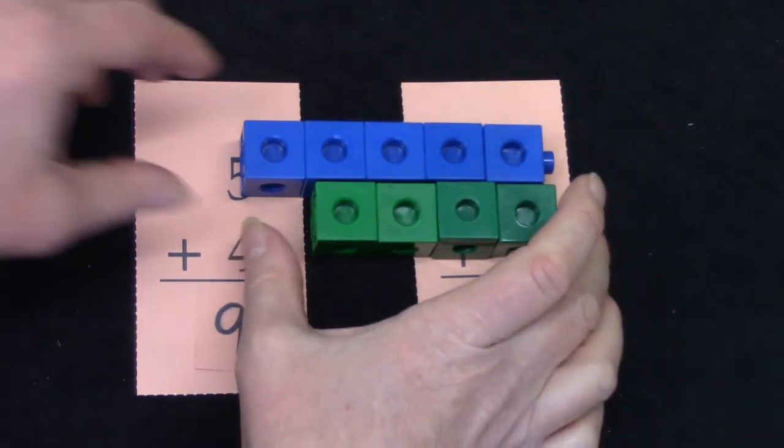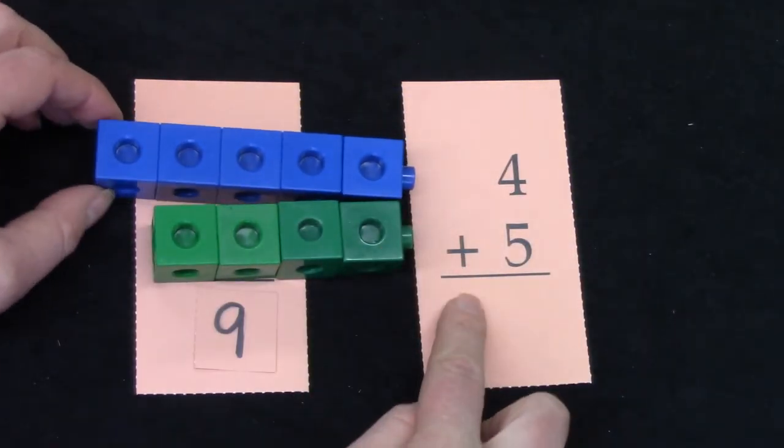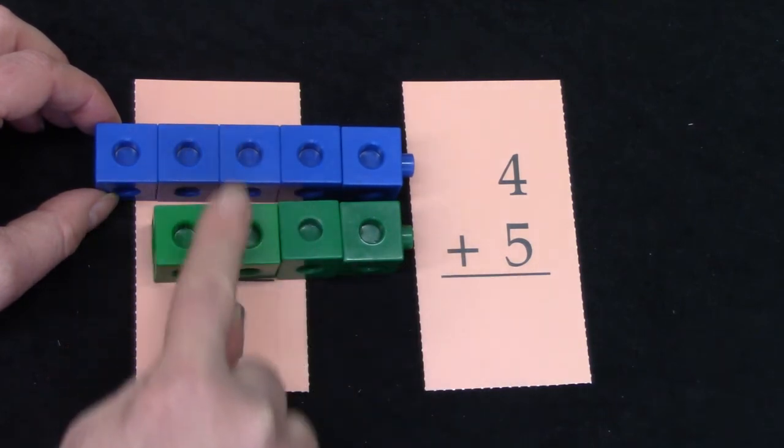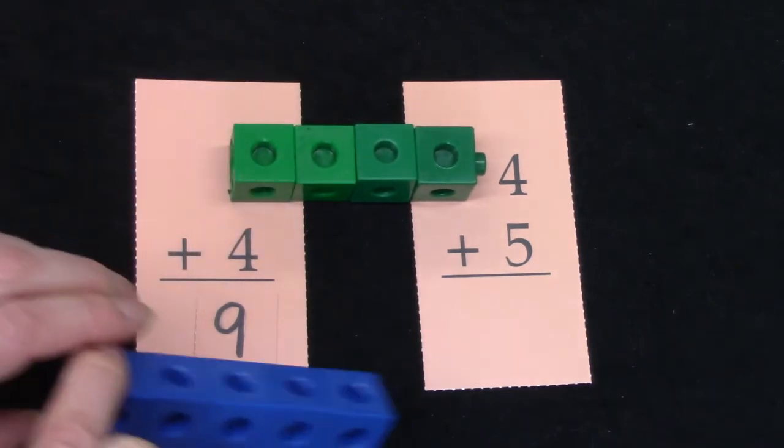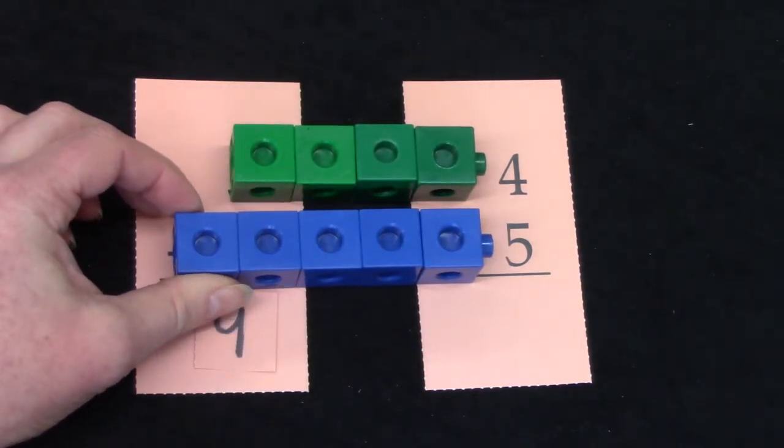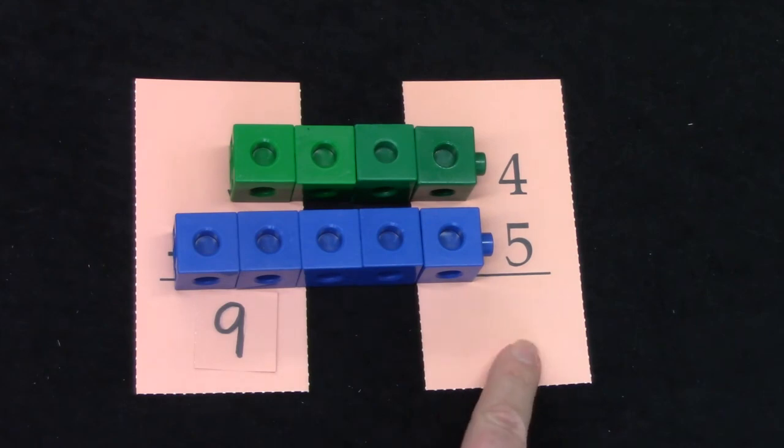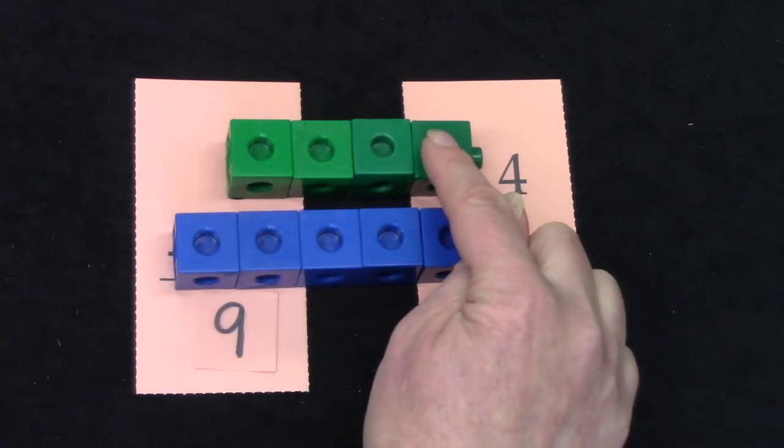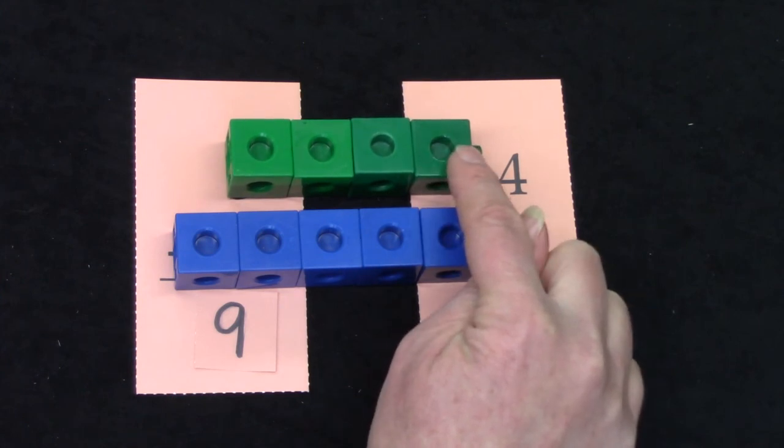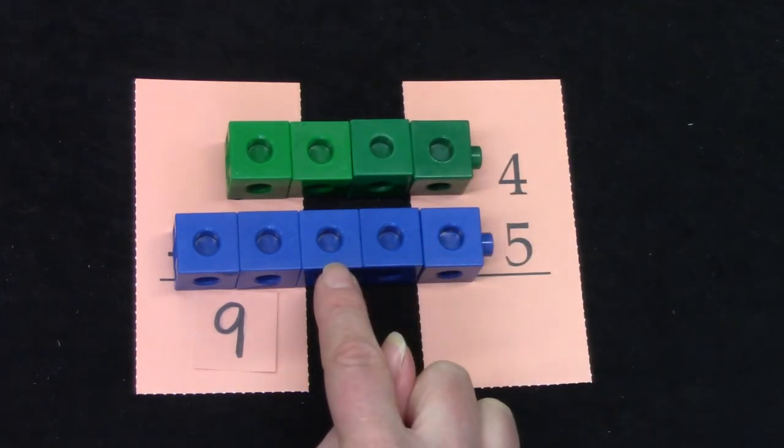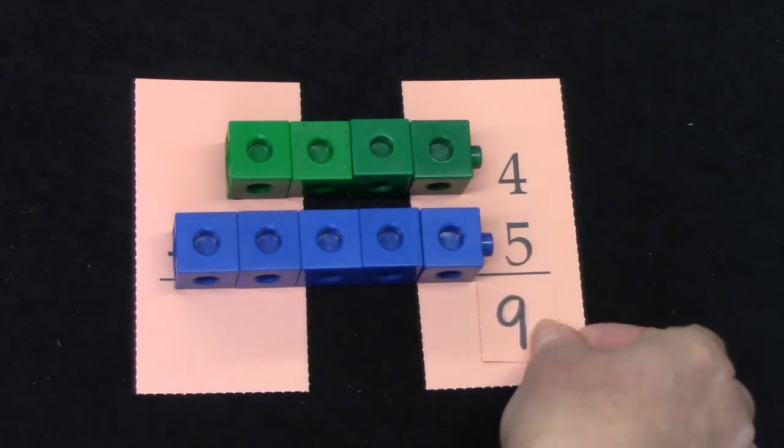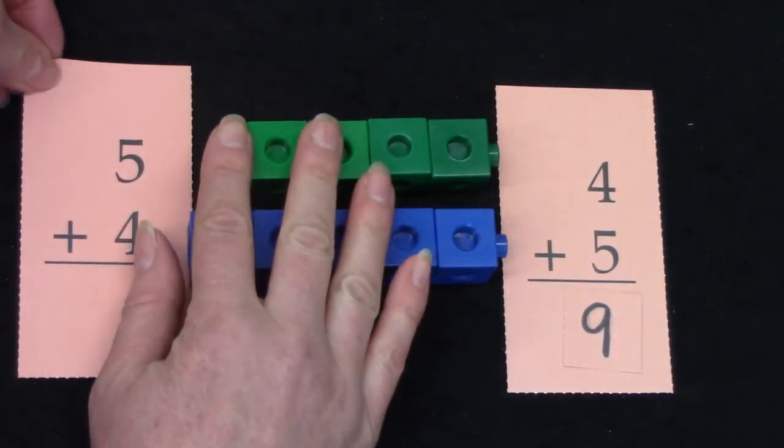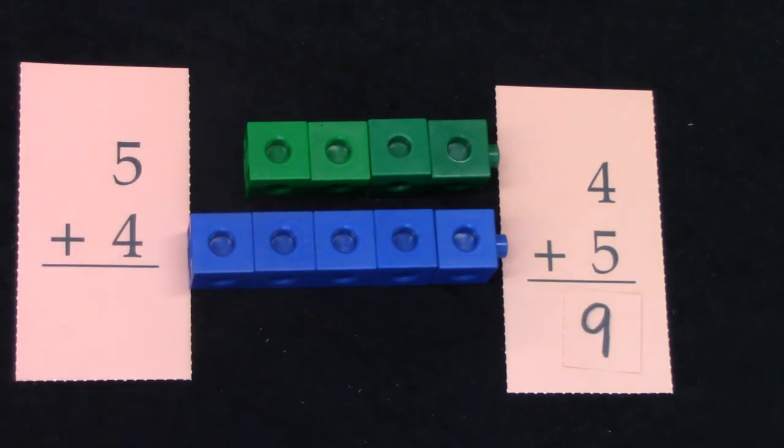Let's switcheroo and look at these facts. 4 plus 5. All I need to do is switch these around. 4 and 5. Do you think that my answer will change? All I did was switch these to match the train of 4 with our number 4 and the train of 5 with our number 5. Look at this. I can just move this over because 4 plus 5 is 9, just like 5 plus 4 was 9.